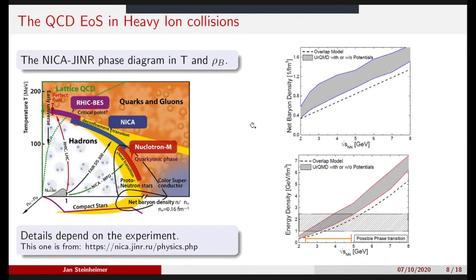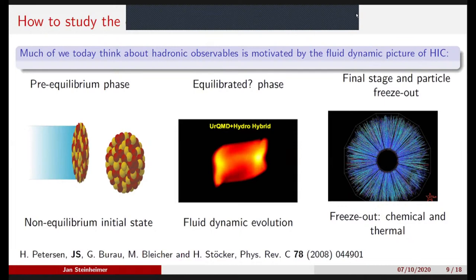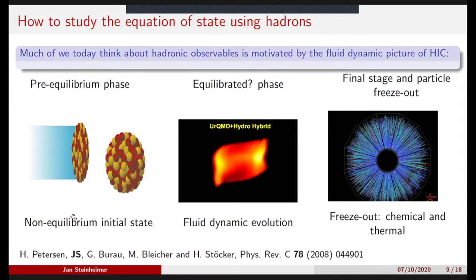Now let's say we have our experiments at these energies — how do we look for the phase transition? Much of what we think about hadronic observables is motivated by a fluid dynamic picture of heavy-ion collisions. This picture is not so complicated: nuclei collide, energy is deposited and quickly equilibrated into a thermal system, which then does the hydrodynamic evolution — expanding according to conservation equations and some equation of state — and then once very dilute, particles freeze out and fly to the detector.